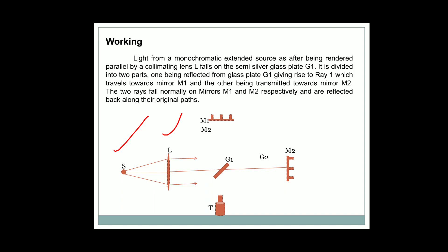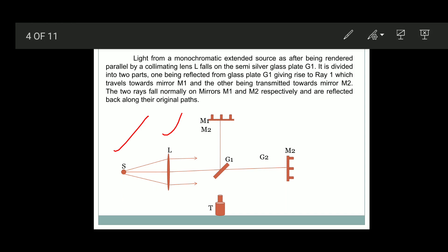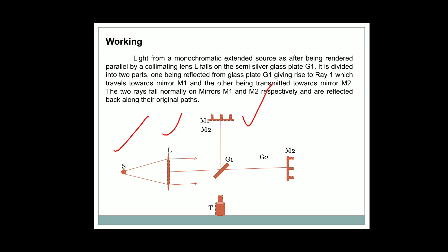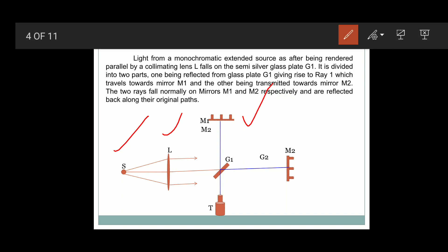The partially transmitted ray passes towards mirror M2, and the partially reflected ray reflects at the bottom of glass plate G1 and reaches mirror M1. These two reflected rays travel along M1 and M2 and reflect back. Since they came from the same source but traveled different distances, they act as coherent rays. These two rays interfere with each other and produce dark and bright rings, which can be seen using the eyepiece of the microscope.